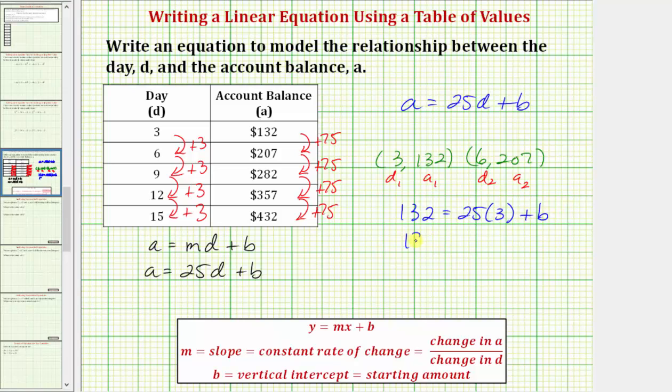Simplifying, 132 equals 75 plus B. Subtracting 75 on both sides would give us the value of B. So we have B equals 132 minus 75, which equals 57.